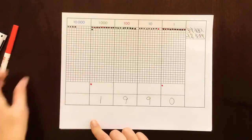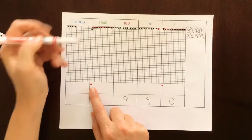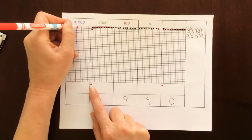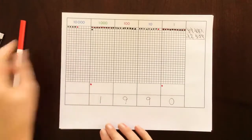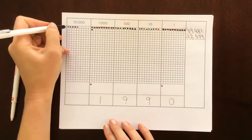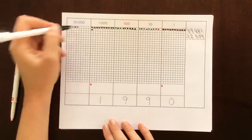Now we're going to move on to the ten thousands place. Remember, we made that exchange, so let's record that up here. And see what we have. We've got 1, 2, 3, 4, 5.